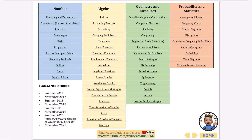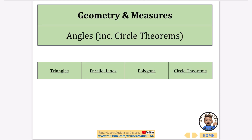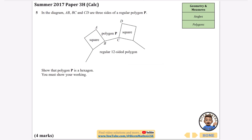I'm going to be continuing with every exam question that has been asked, and we're going to go to the angles section. This document is fully hyperlinked, so if you want to download it you can get it from the link in the description. The previous video covered triangles and parallel lines, so this video I'm just going to be focusing on polygons — things like pentagons and hexagons.